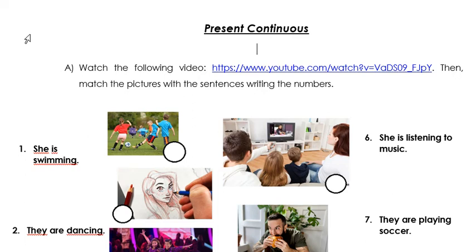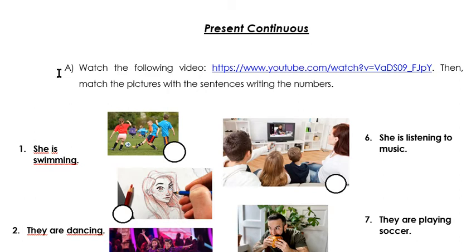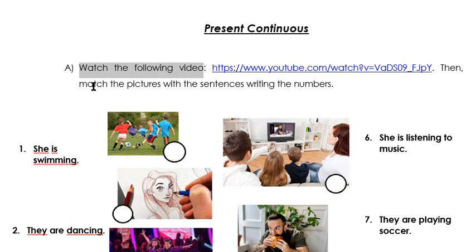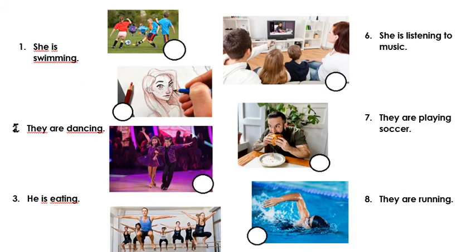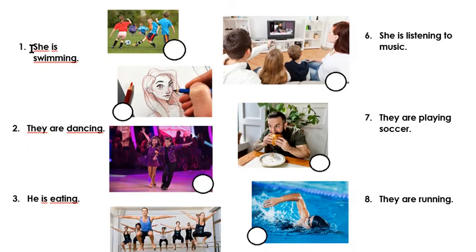Today we'll start with the Present Continuous Tense. In the first activity you will have to watch the following video. You will go to this link. And then you will have to match the pictures with the sentences writing the numbers. Here you have sentences on both sides and here you have different pictures — people doing different activities. In the video you will find these activities and the idea is that you identify and match the sentences with the correct picture.